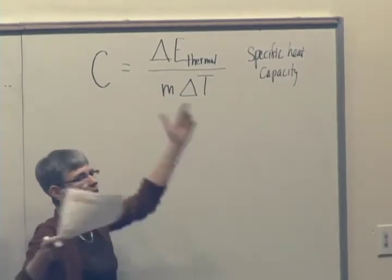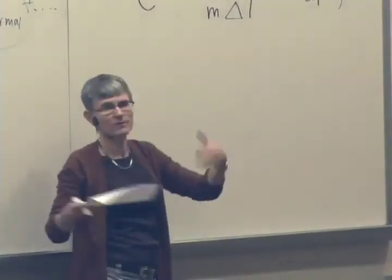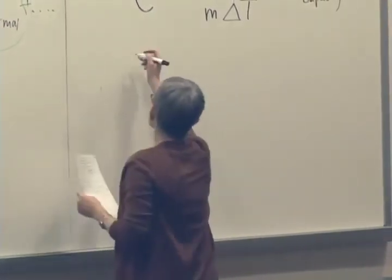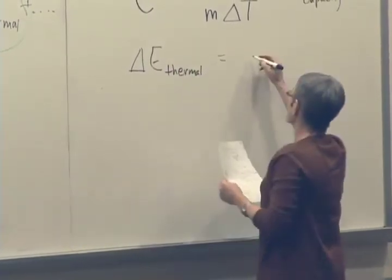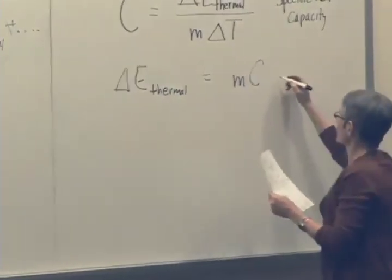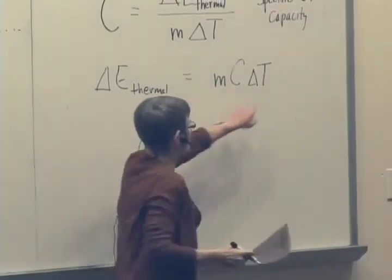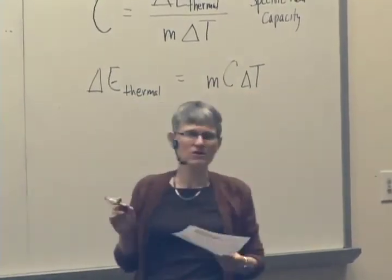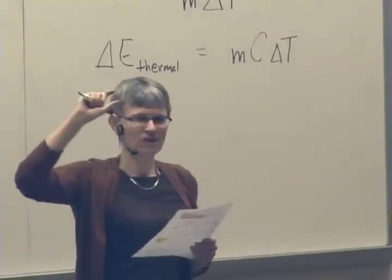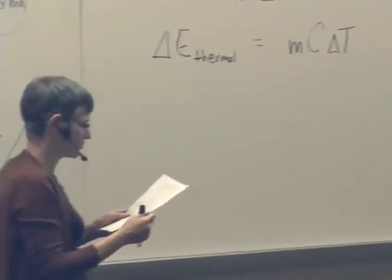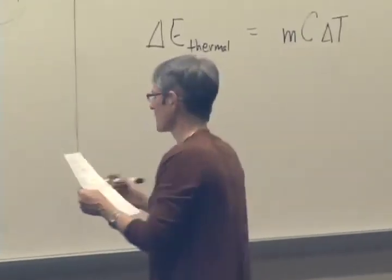Specific heat capacity is usually represented by a capital C. It's defined as the change in thermal energy of a system whose temperature increases by delta T, per some unit of mass. It's often specified per gram, could be per kilogram, per mole, or per atom. We can rewrite this: the change in thermal energy of a system equals the mass times the specific heat capacity times the change in temperature: ΔE_thermal = mCΔT. Since this is a delta T, it doesn't matter if we use Kelvin or Celsius - one degree Celsius is the same size as one degree Kelvin.